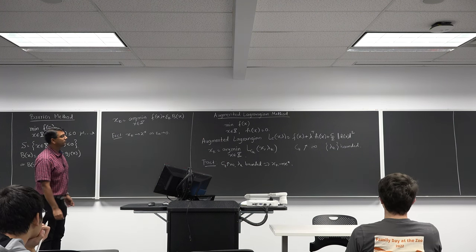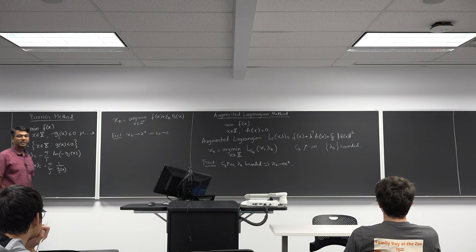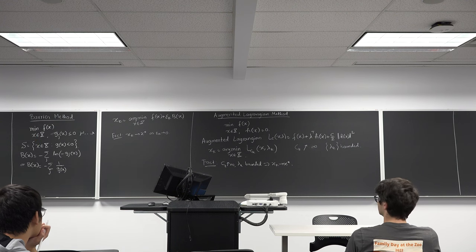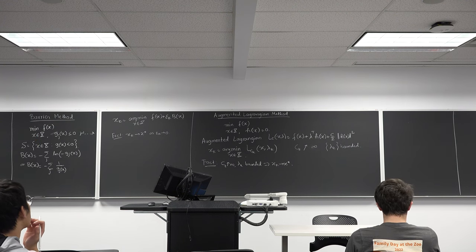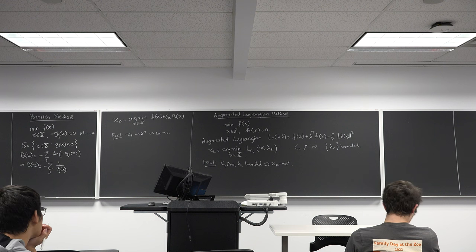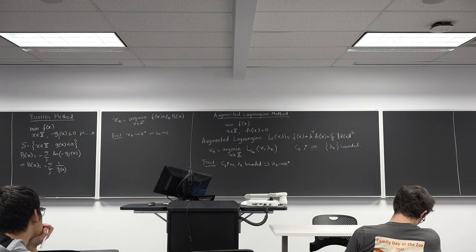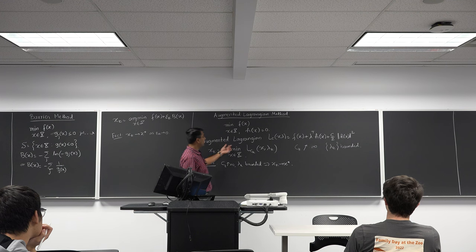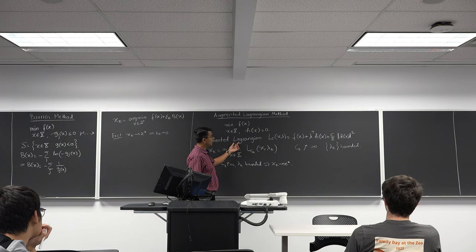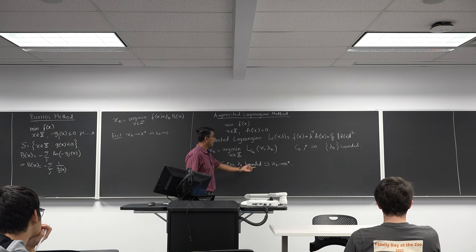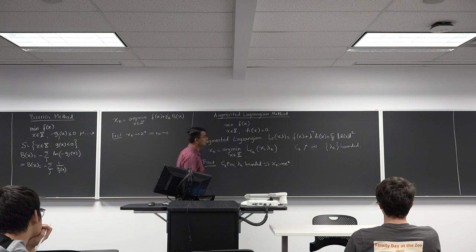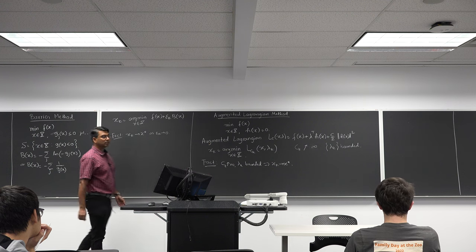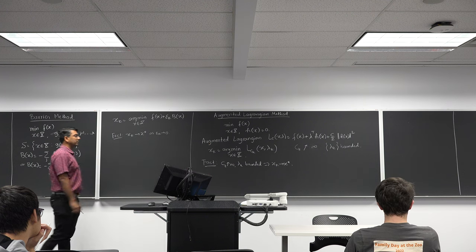Any questions so far? In assignment 4 I have given you a question on augmented Lagrangian. You will try to solve this augmented Lagrangian by hand and you will see that this particular limit actually exists in that particular example problem. I have given you an update scheme for lambda_k also in that assignment, and you will see that this iteration actually converges to x star eventually.